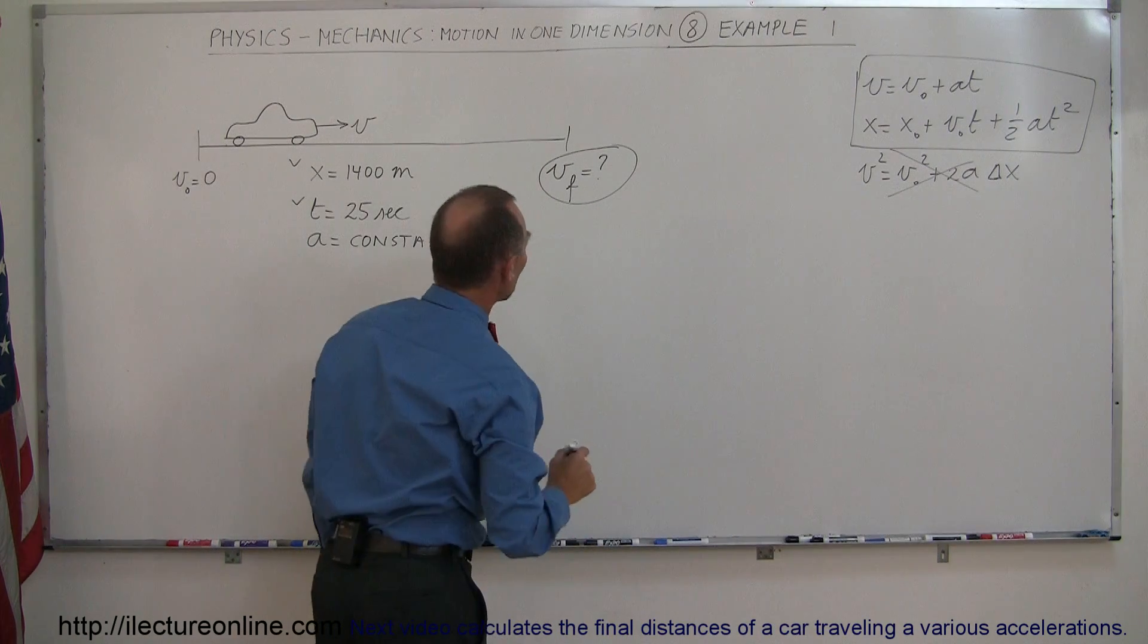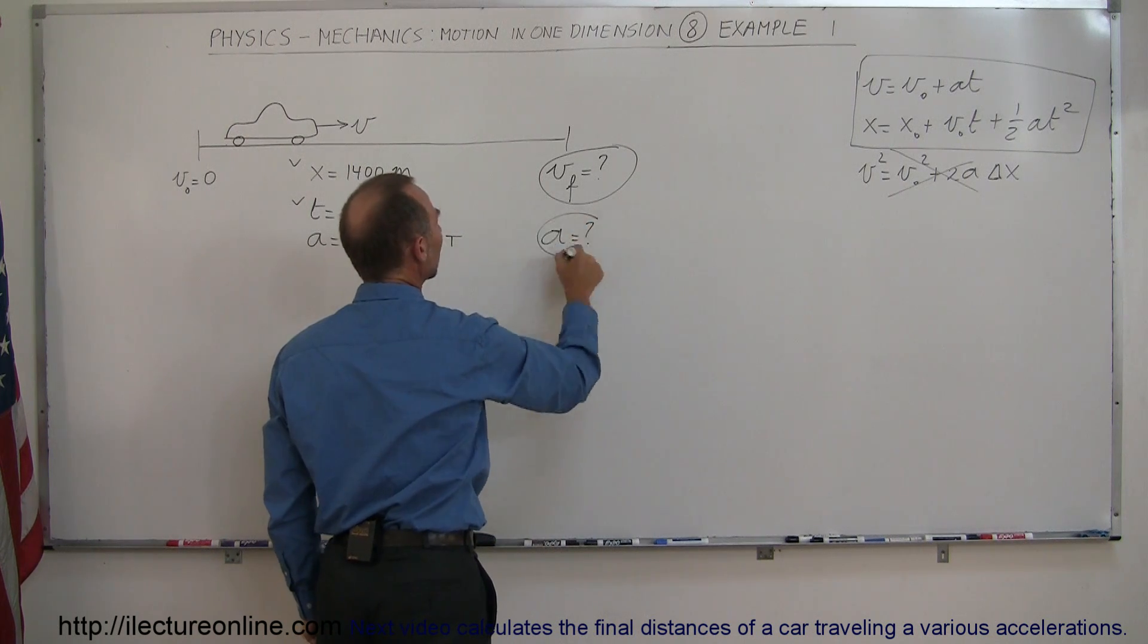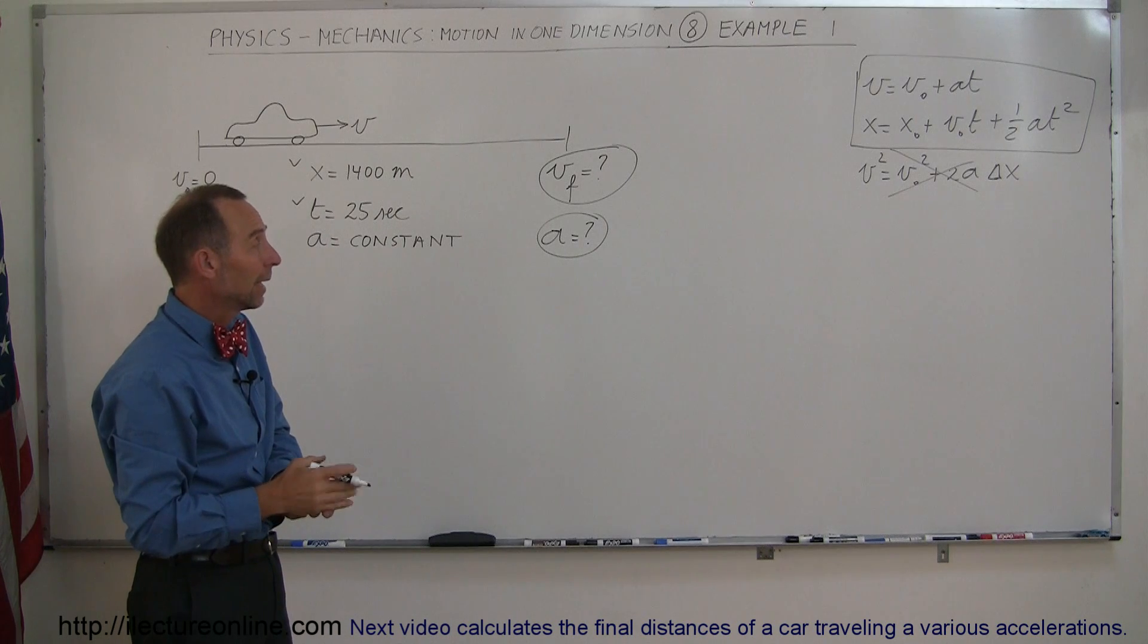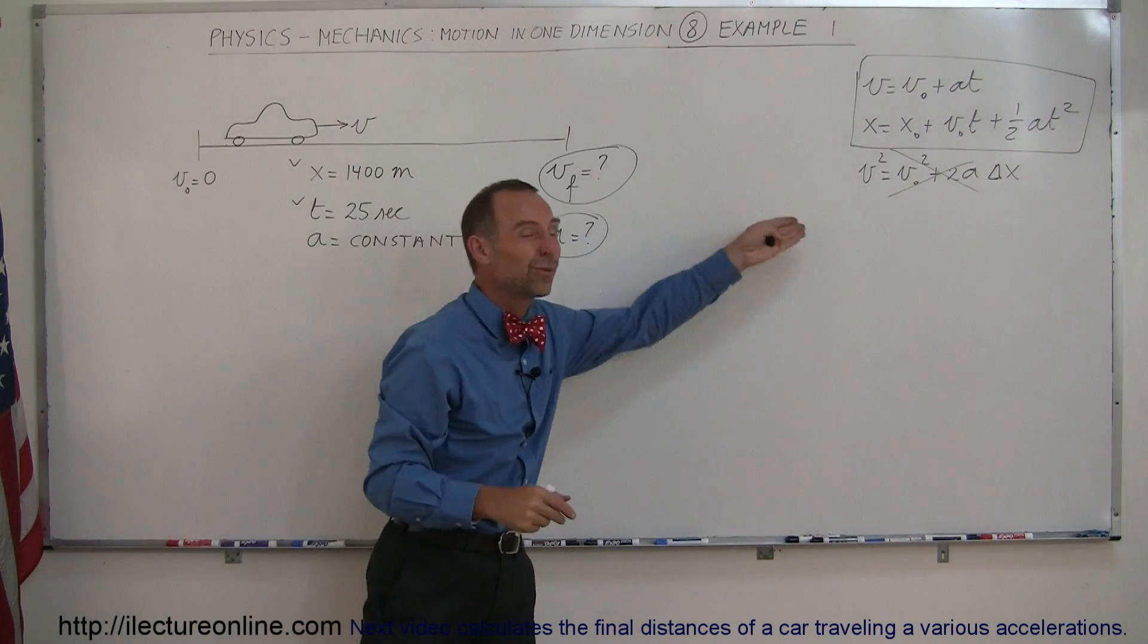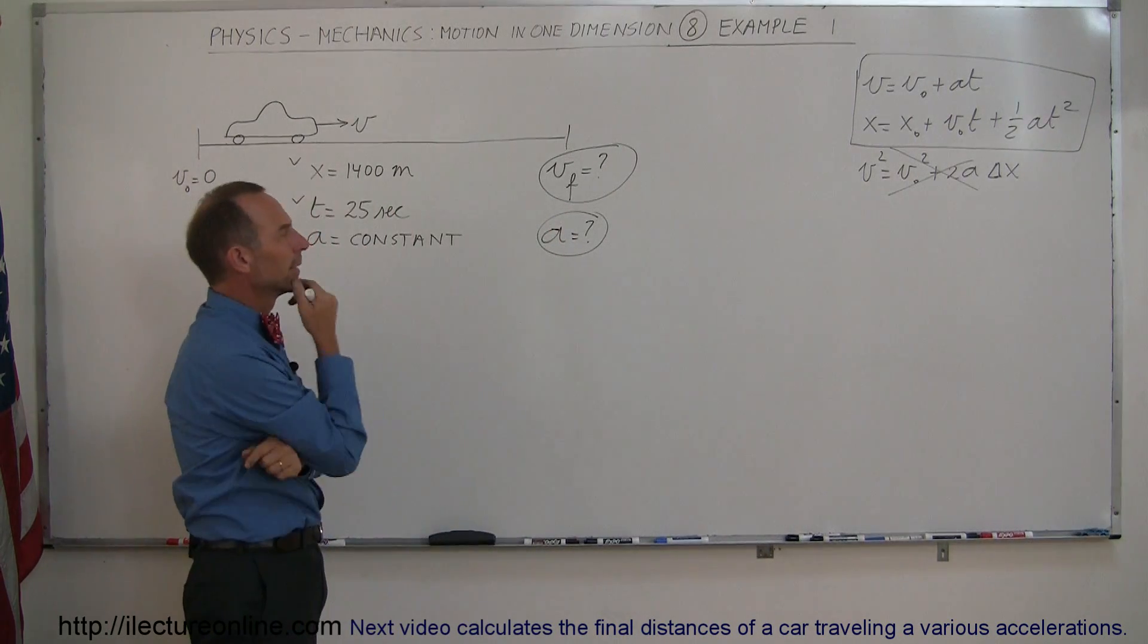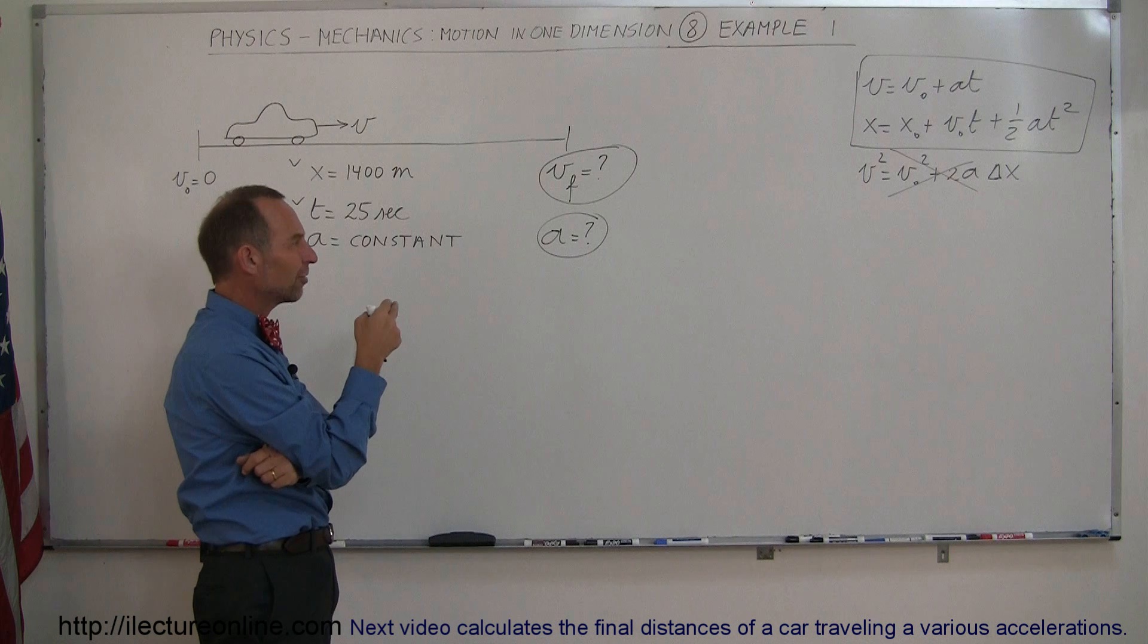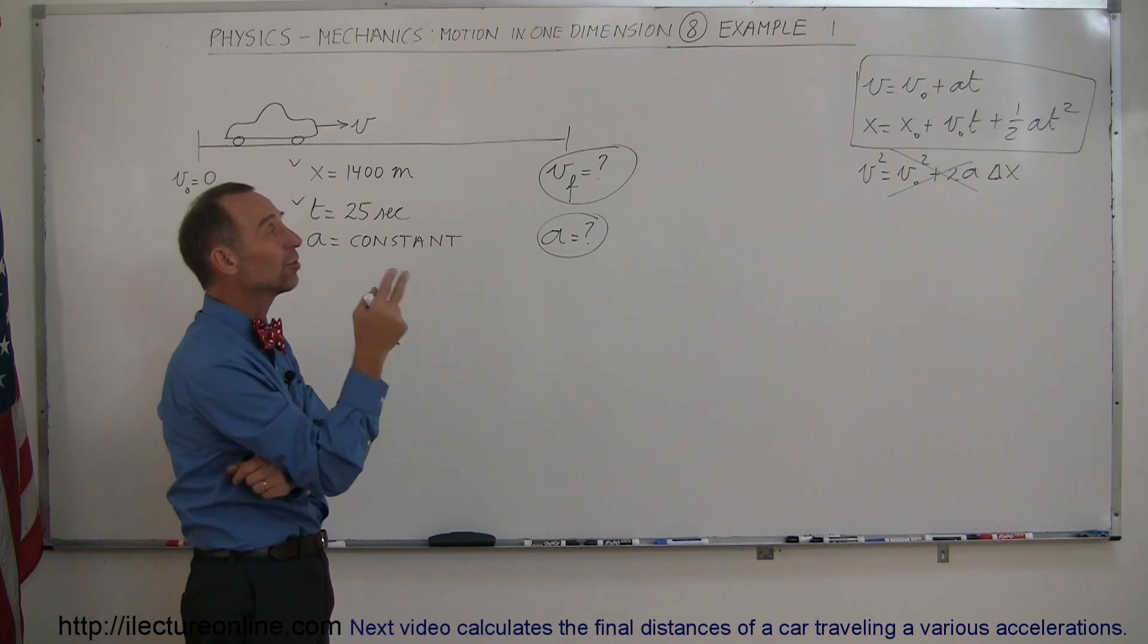So what is not known? We don't know the acceleration. A is not known, so even though they don't specifically ask for it, it's not a known quantity, and the fact that they tell us that it's constant just means that we're able to use those three equations of kinematics. So it means we need to find two things, velocity and acceleration, which means we probably need to use two equations and use them simultaneously.